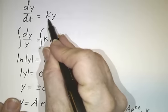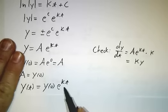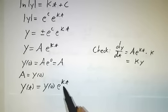If k is positive, you get growth. e to the kt increases with time. If k is negative, it decreases with time.